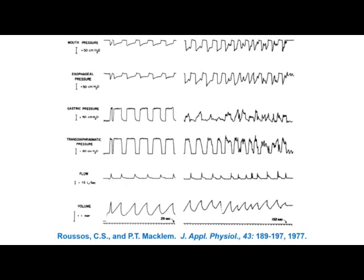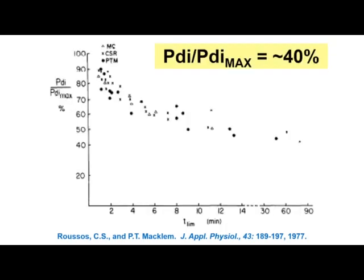In their experiment, so long as an individual achieved their target transdiaphragmatic pressure on each breath, they continued. When they came to fatigue, they were unable to maintain it, indicating diaphragm fatigue at that level. Plotted as percent of max PDI against how long subjects could sustain it, not surprisingly, at 90% or 80% of maximum PDI subjects could not sustain it very long, but as the percent of max PDI fell, they could sustain it longer, with studies lasting up to 90 minutes.